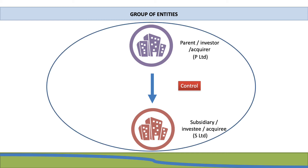These two companies are referred to as a group as they are related to one another. P Limited controls S Limited, and when we refer to both companies together we call them the P Limited group — meaning P Limited and S Limited combined.